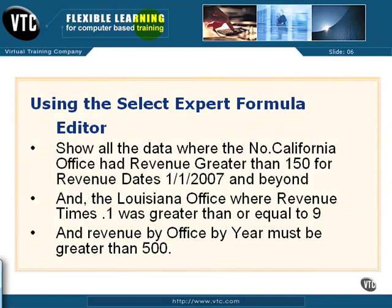Here's the lowdown. Using the Select Expert Formula Editor, show the following cases: show all the data where Northern California had revenue greater than 150 for revenue dates 1-1-2007 and beyond, and the Louisiana office where revenue times .1 (being 10%) was greater than or equal to 9, and revenue by office by year must be greater than 500.